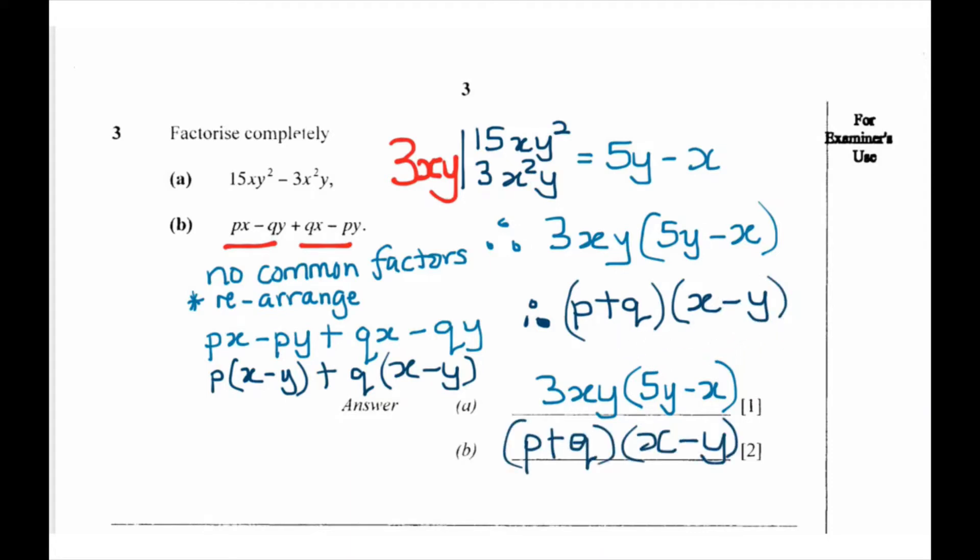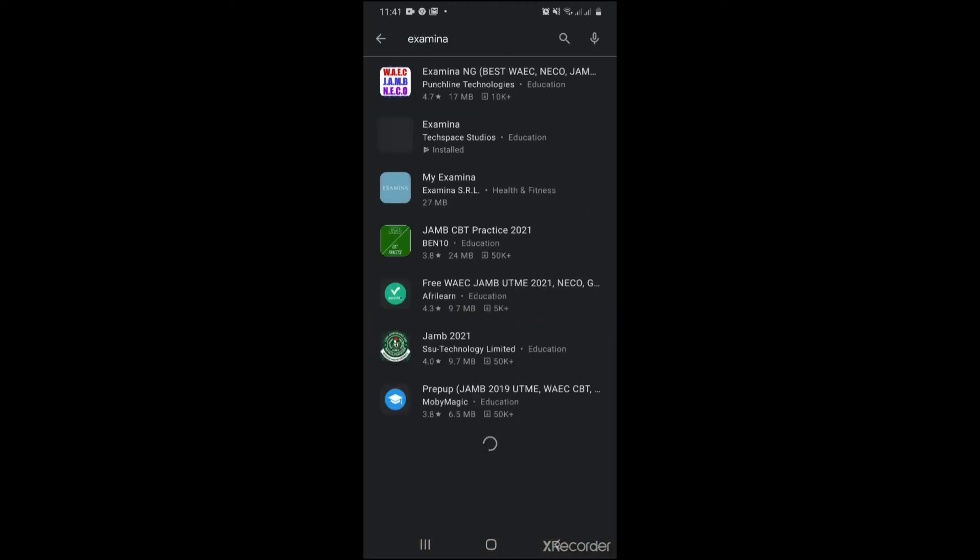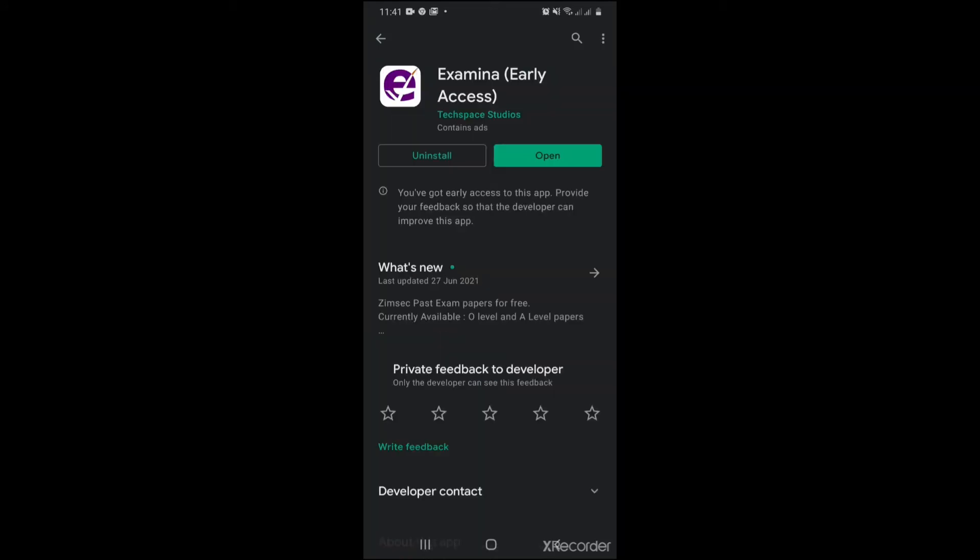So this marks the end of number 3 for paper June 2005. Do not forget to view some of these past papers on Examiner app. I found an app that is ZIMSEC Past Papers called Examiner app. You can search it on Google Play and download.